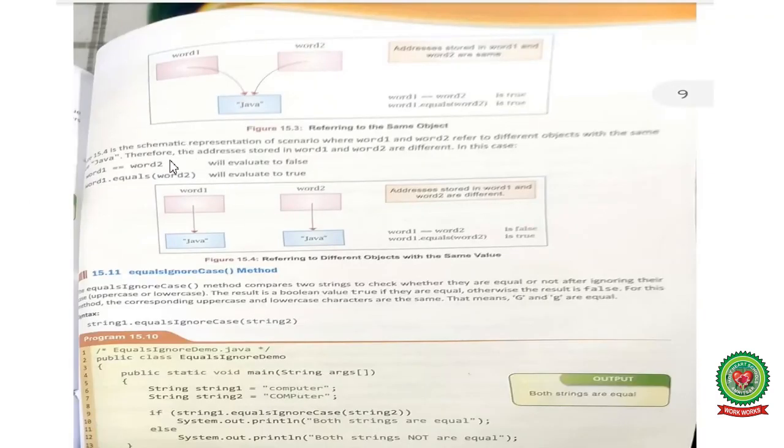See on page 407. Here word one is storing the string Java and word two is also storing the string Java. This means word one and word two are referring to the same object. So when the addresses stored in word one and word two are same, both double equals and equals method will return true.